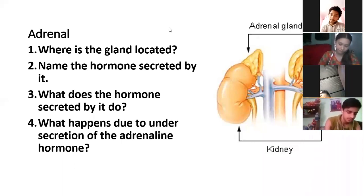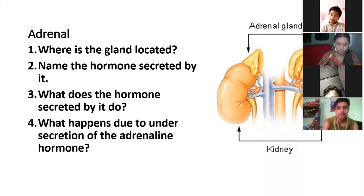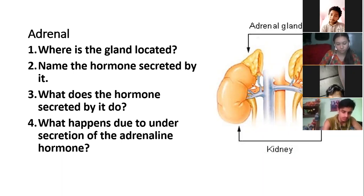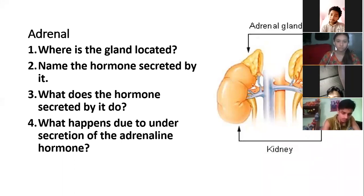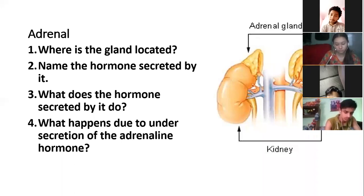The triangular gland found just above the kidney is called the Adrenal Gland. Due to its location above the kidney, it is also called the Suprarenal Gland.